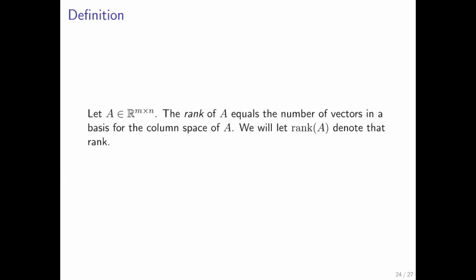The column space of A is a subspace. So, the dimension of that subspace is the number of vectors in the basis. This is often called the rank of matrix A. So, the rank of matrix A equals the number of vectors in the basis for the column space of A, which is the same as the number of linearly independent columns that matrix A has.